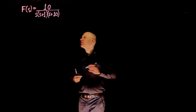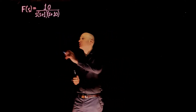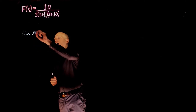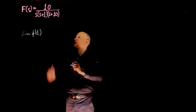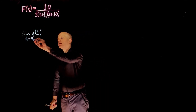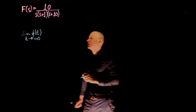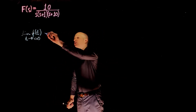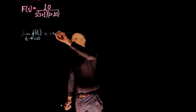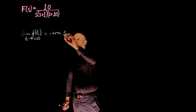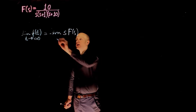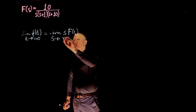The final value of f(t) is the limit of f(t) — the inverse transform of F(s) — when time tends to infinity. According to the Final Value Theorem, this is equivalent to the limit of s times F(s) when s tends to 0.